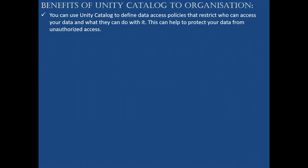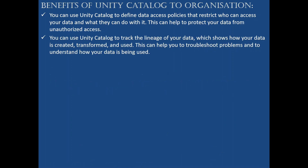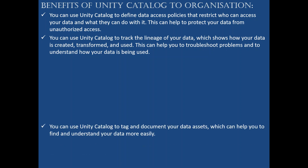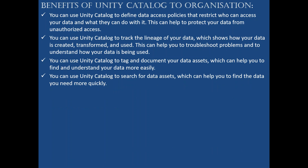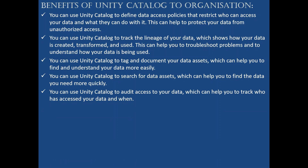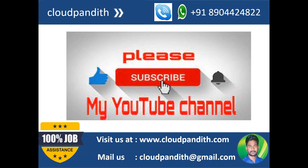You can use Unity Catalog to define data access policies that restrict who has access to your data and what they can do with it, protecting data from unauthorized access. You can track the lineage of your data — how it is created, transformed, and used. You can tag and document your data assets to find and understand data more easily, search for data assets quickly, and audit access to your data to track who has accessed it.